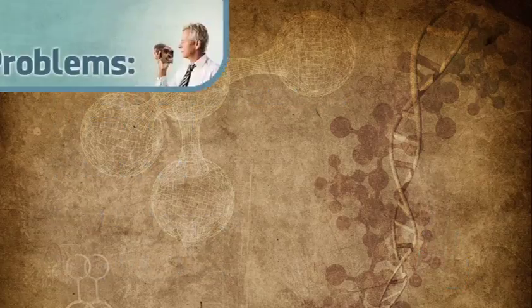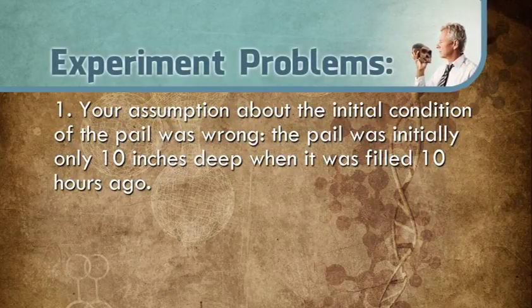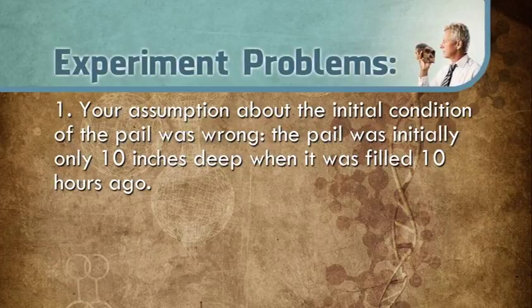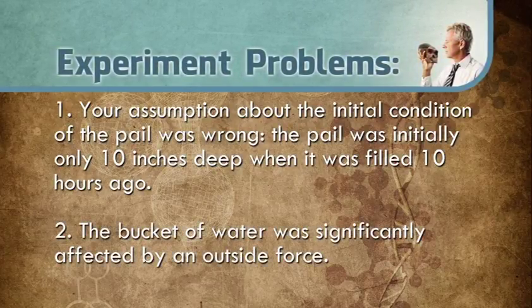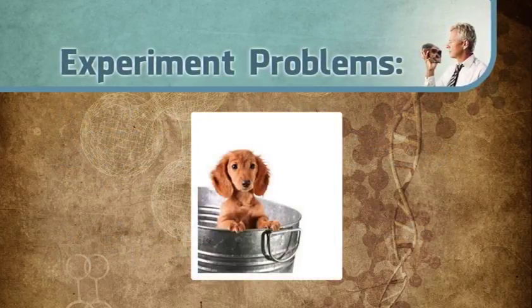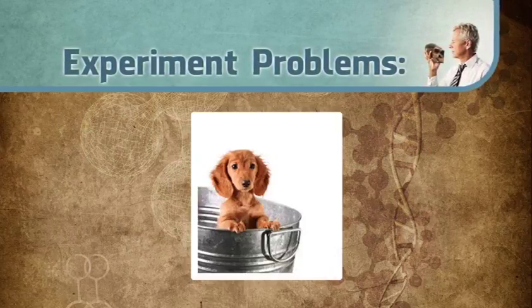But there are problems with your experiment. Little did you know that, number one, your assumption about the initial condition of the pail was wrong — the pail was initially only ten inches deep when it was filled ten hours ago, not twelve inches. Number two, the bucket was significantly affected by an outside force. Nine hours ago, a dog jumped in and splashed half the water out, leaving only a quarter of the pail full — just three inches. The force of the dog hitting the bucket caused the leak hole to get bigger, changing the leak rate. Then one hour ago, the dog's owner came and filled that pail back to six and a half inches. You only arrived thirty minutes ago. Was your experiment valid, or did the assumptions corrupt the result?